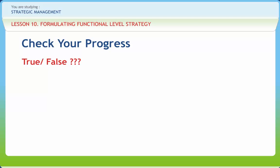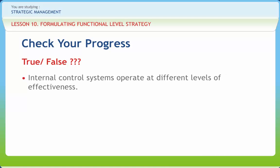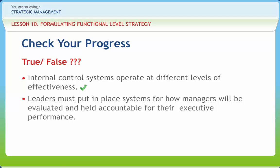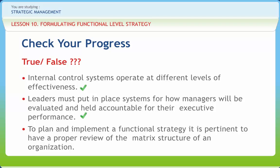Let us check if we have understood the various concepts discussed in this lesson. First: Internal control systems operate at different levels of effectiveness — Right or wrong? Right. Second: Leaders must put in place systems for how managers will be evaluated and held accountable for their execution performance — Right or wrong? Right. Third: To plan and implement a functional strategy, it is pertinent to have a proper review of the matrix structure of an organization — Right or wrong? Wrong.